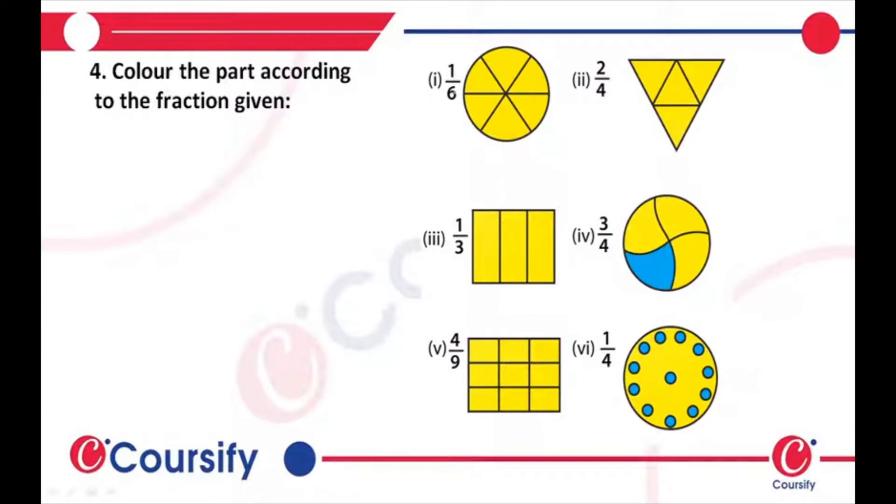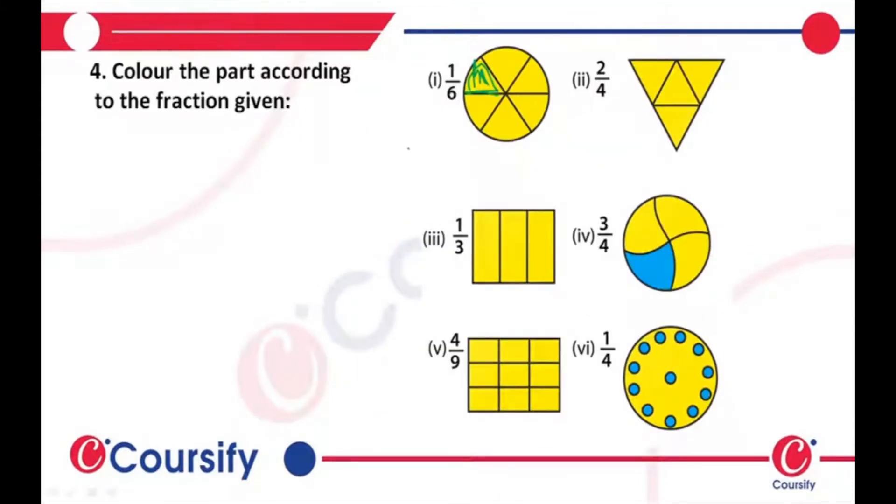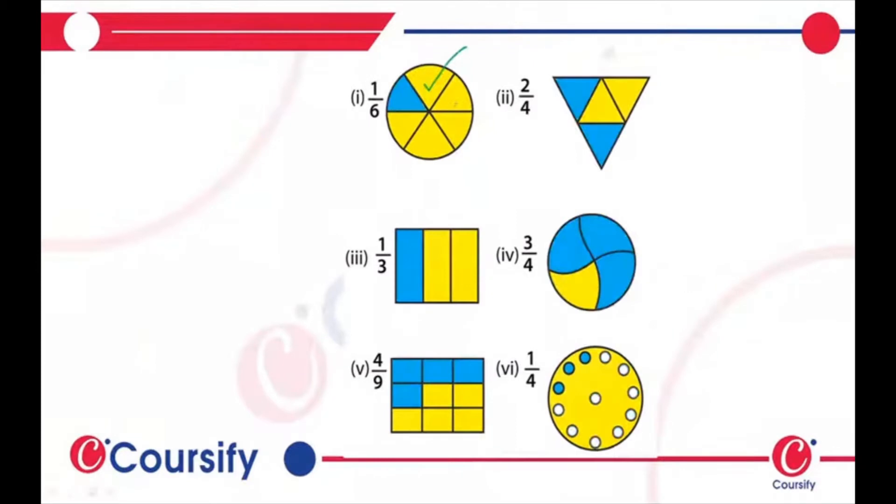So this is 1/6. Let's see, there are 1, 2, 3, 4, 5, 6 parts, so 1/6 means you just have to color one of these, so it will become like this. This is how you color 1/6 parts.